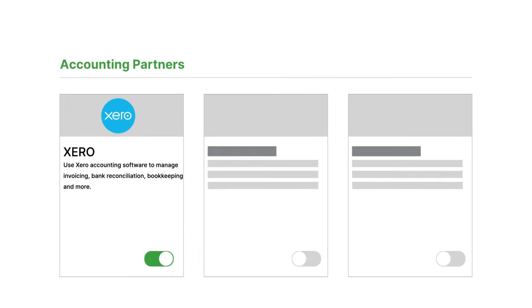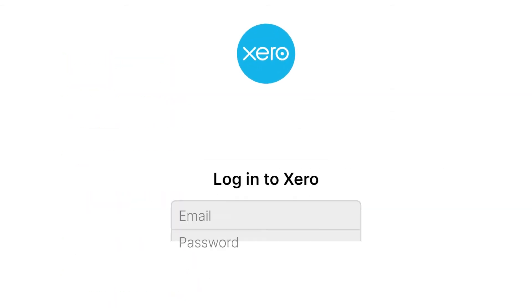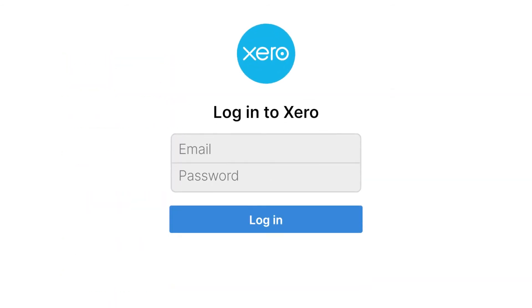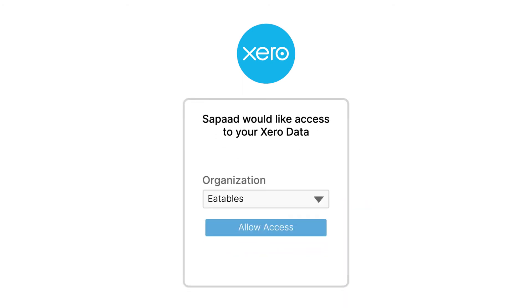You'll then be directed to Xero's homepage. Enter the credentials of your Xero account and click Login. Select the appropriate organization from the drop-down and click Allow Access.